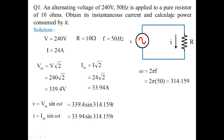The power consumed by the resistance is given by P = V × I, using the RMS values of voltage and current. So P = 240 × 24 = 5760 watts. This is the RMS value of power consumed by the resistor. This is how you understand the basics of AC applied to a resistor.